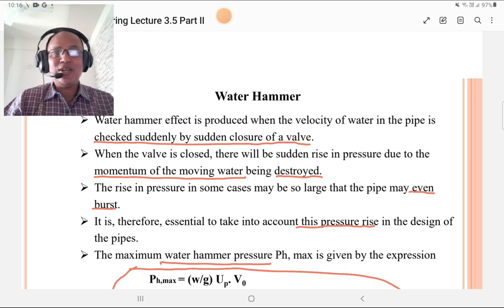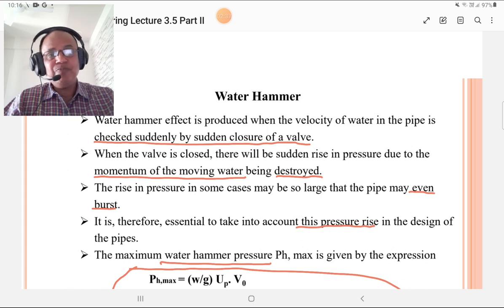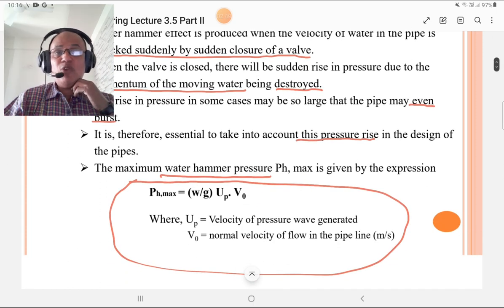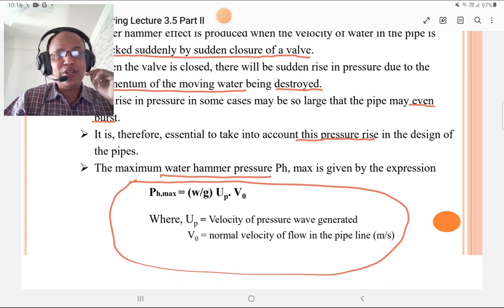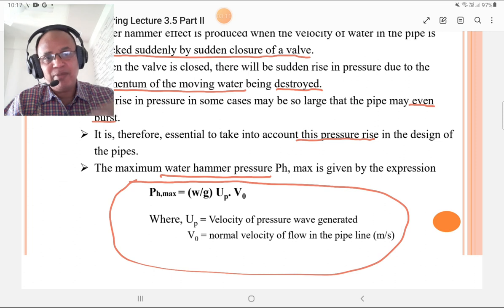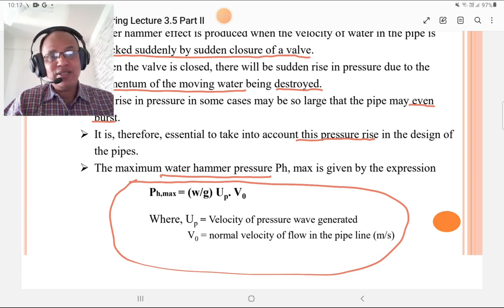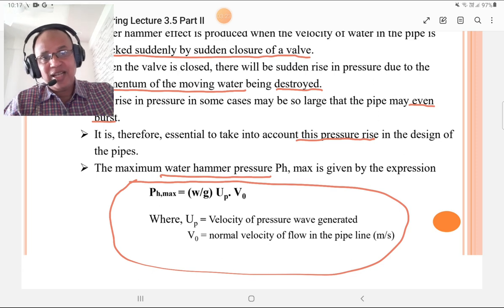It is therefore essential to take into account this pressure rise in the design of pipes. The maximum water hammer pressure pH max is given by the expression: pH max = (W/G) × Up × V0, where Up is velocity of pressure wave generated, V0 is normal velocity of flow in the pipe line in meters per second. W is specific weight of water in Newton per meter cube, and G is acceleration due to gravity in meter per second squared. You must know all the units for calculations.